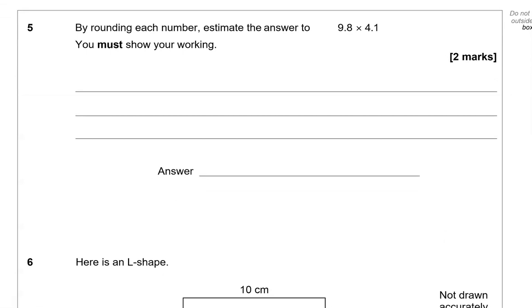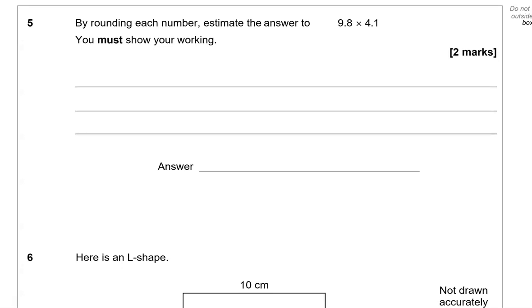By rounding each number, estimate the answer to 9.8 times 4.1. You must show your working. So 9.8, we can round that to 10. And 4.1, we can round that to 4. So we'll do 10 times 4. So it's 4 lots of 10, which gives us 40. It's a case of adding a 0 at the end as well, if you're used to that method.